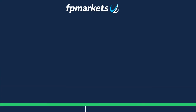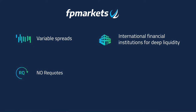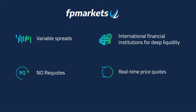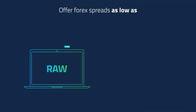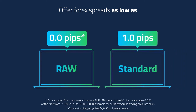FP Markets provides variable spreads for fast trade execution with no re-quotes. Our feed comes from leading international financial institutions for deep liquidity, along with real-time price quotes for different tradable instruments. This allows us to offer Forex spreads as low as 0.0 pips on raw accounts and 1.0 pips on standard accounts.